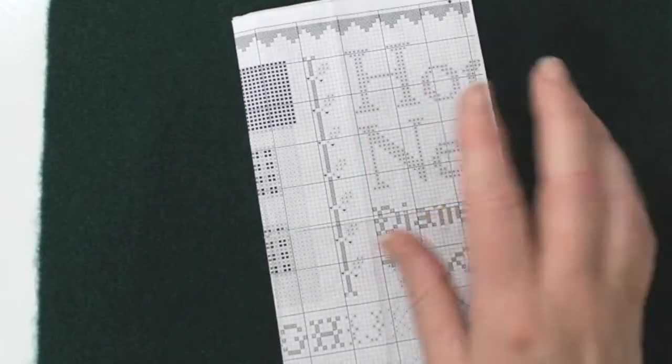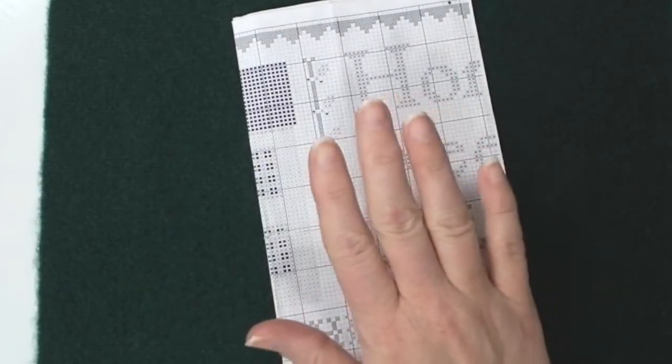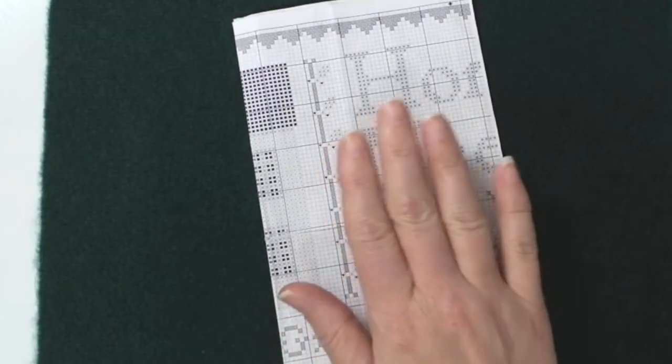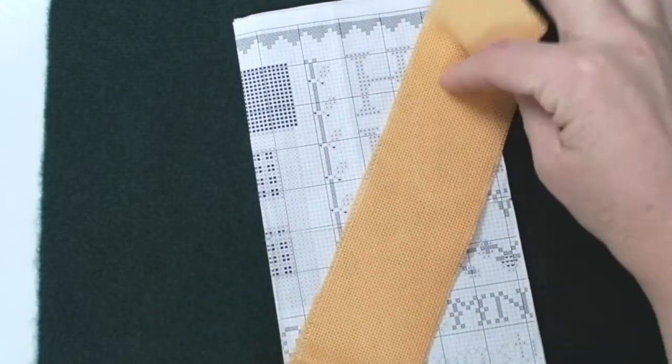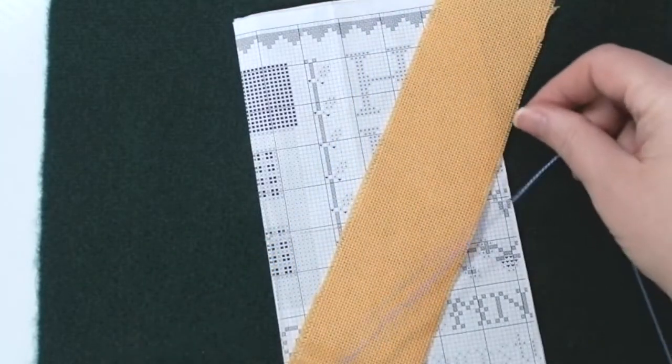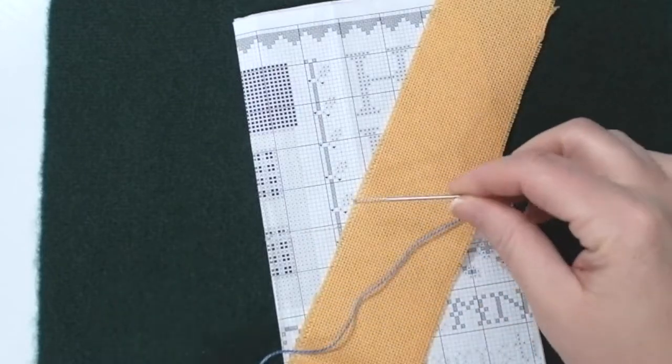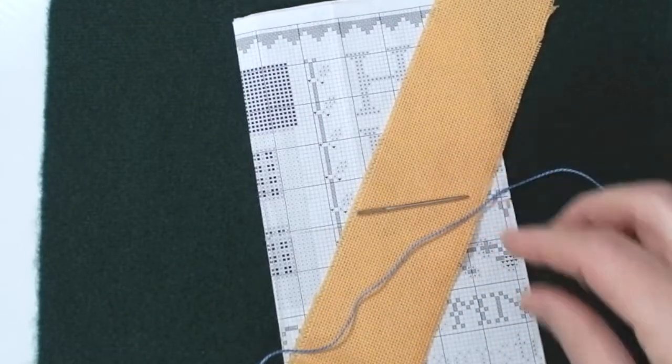Once you're ready to start embroidering, the first thing you need to do is select a pattern. Commercially made patterns will give you instructions on what type of fabric to get, what type of thread to get, and most often what type of needle you'll need and other notions.